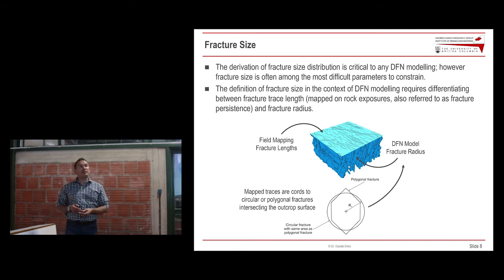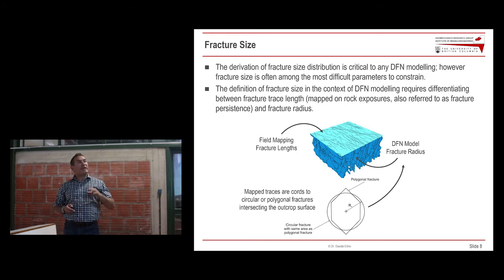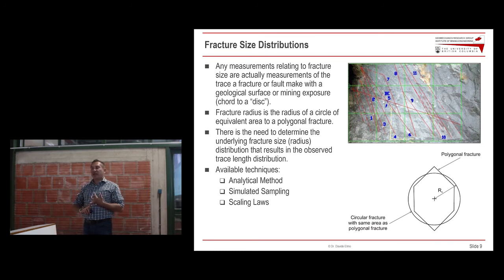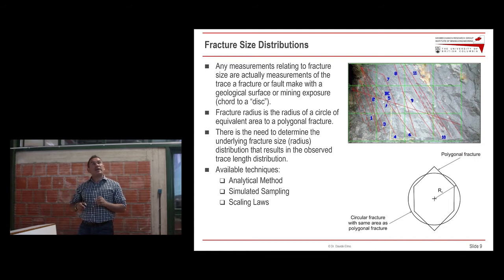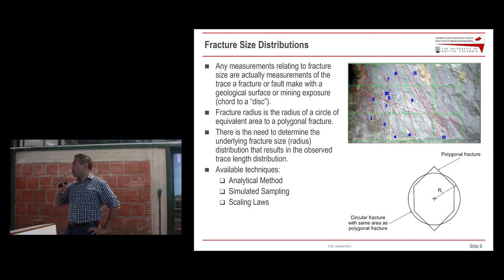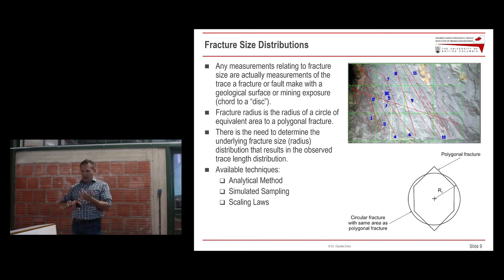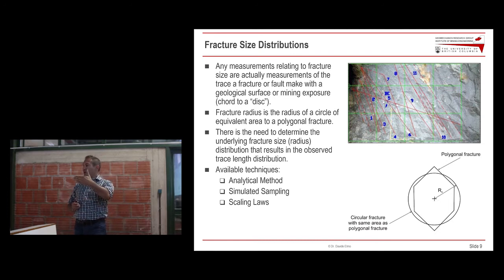Assuming we have access to field data for length, we can process these intersections and derive the fracture radius distribution. There are different methods — analytical methods like the Warburton-Einstein method, which accounts for truncation bias and censoring bias. We cannot always map the full length of fractures because they may terminate outside the mapping window. We can also use a simulated sampling approach: generate a model based on assumptions for orientation and intensity, estimate the length, generate the model, check whether results match field mapping, and iterate until we have a good fit.